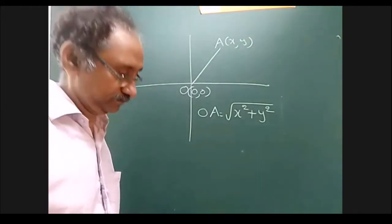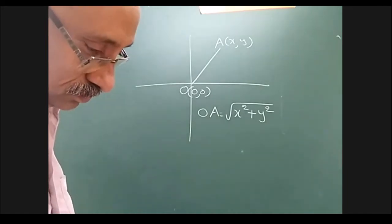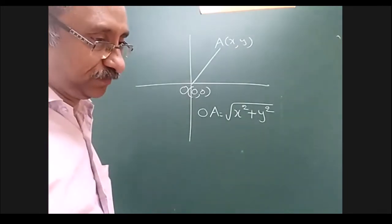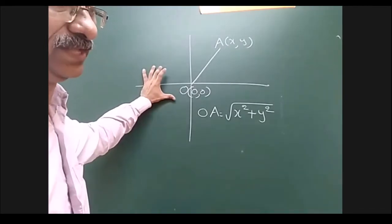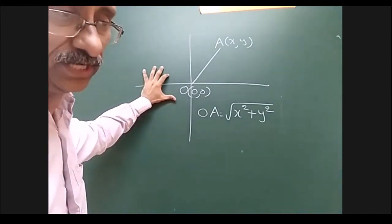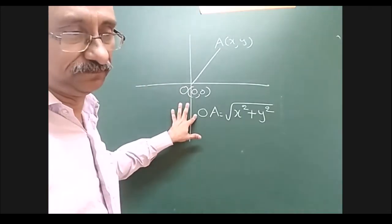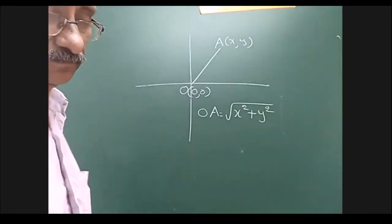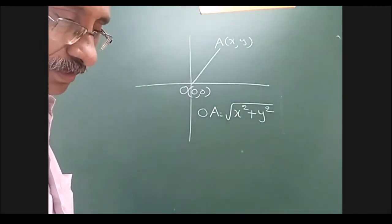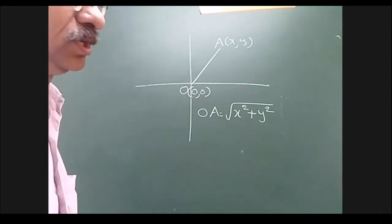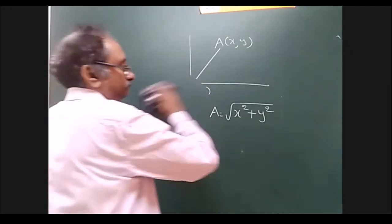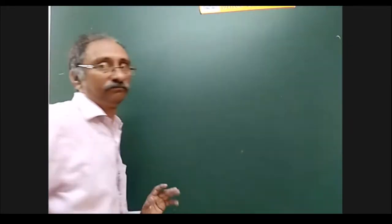What is the distance from the origin to any point? The coordinates of the origin are (0, 0). Suppose capital A is (x, y). Then OA = √((x − 0)² + (y − 0)²) = √(x² + y²). So the distance from the origin to the point A(x, y) is OA = √(x² + y²).